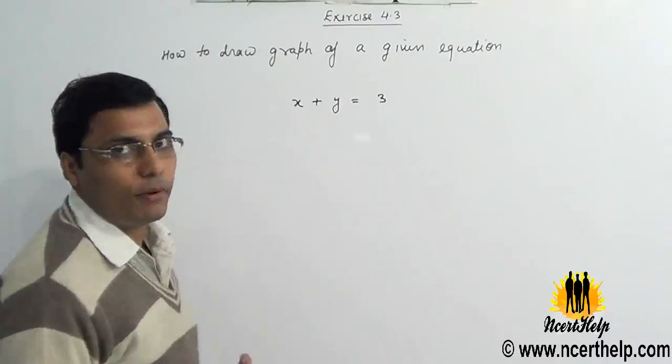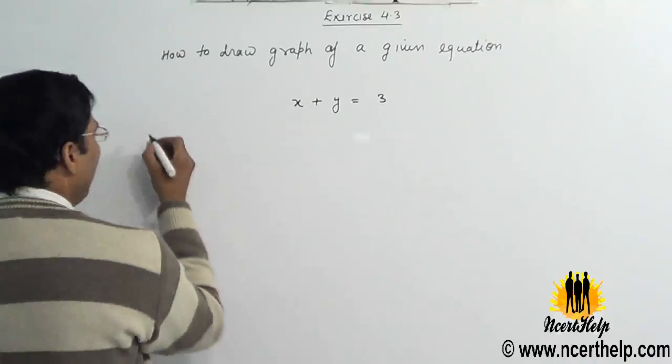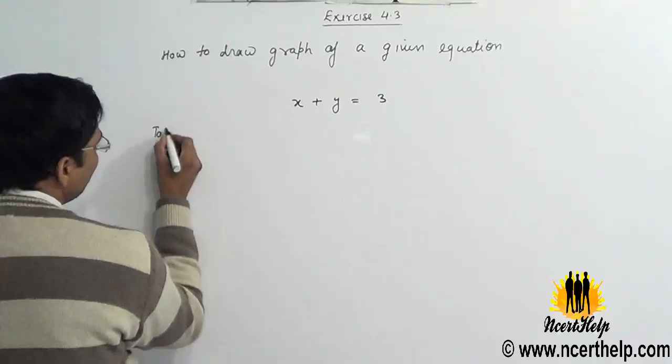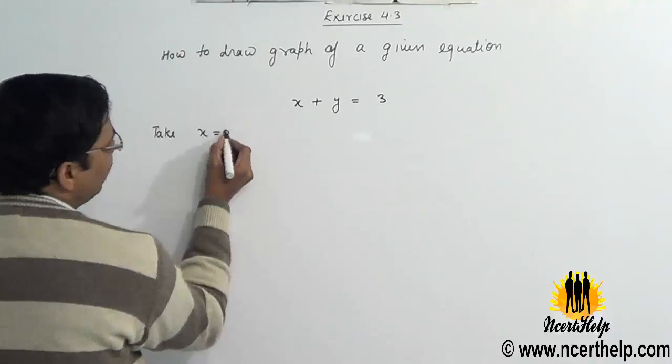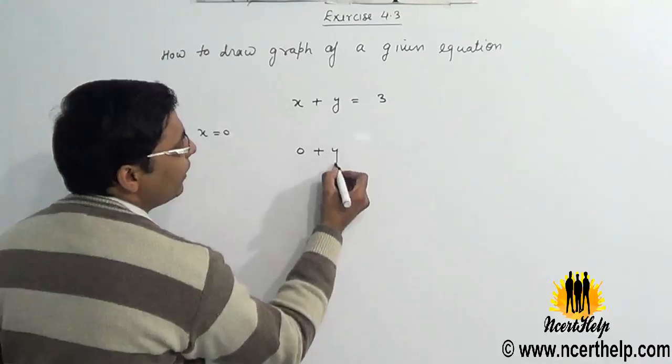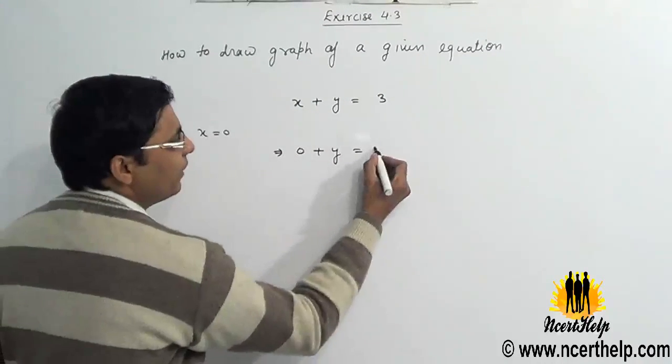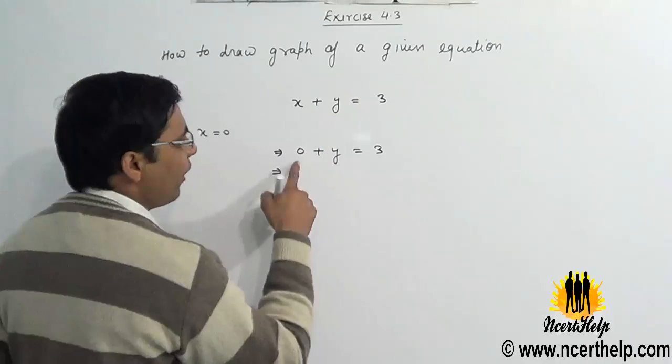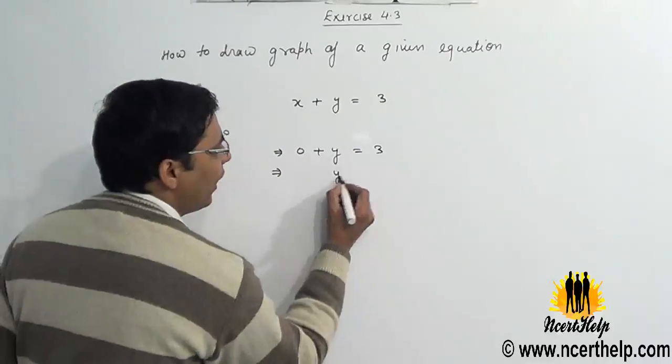Take x equals 0. Now put x equals 0 in this equation. We will get, I have plugged x equals 0, I have got y equals 3. So this is my first point.